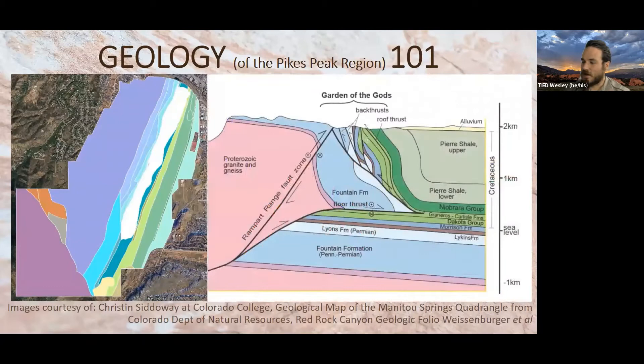To give a sense of how big these layers are: the Fountain Formation is actually below sea level except where it has been tilted upright by faulting and uplift. We're talking about roughly two kilometers — about a mile and a half — that's how thick these layers are. That makes sense if you look at Red Rock Canyon from left to right and consider how thick those layers are.